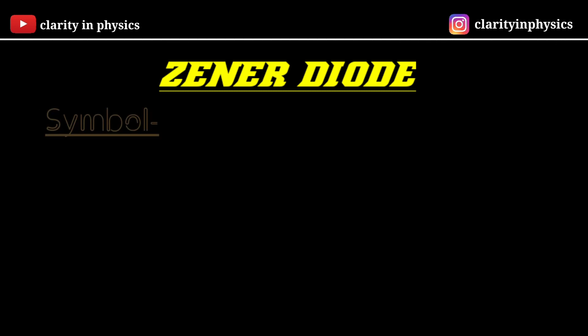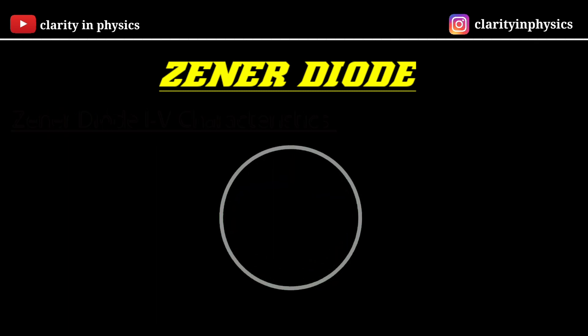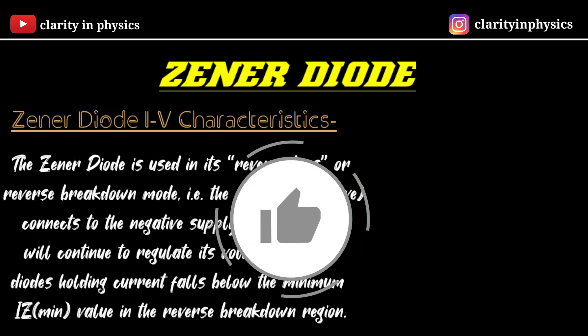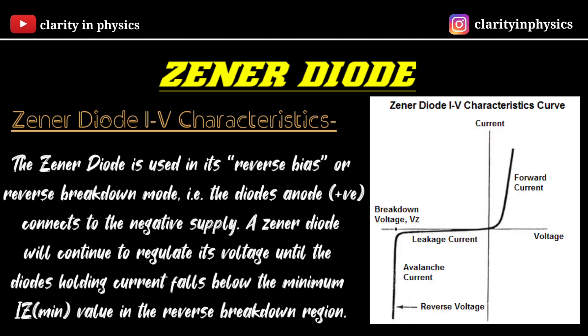The symbol of the zener diode is as shown. Now, the zener diode IV characteristics — where I is current and V is voltage — the zener diode IV curve.